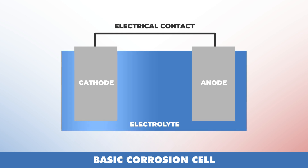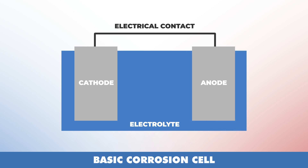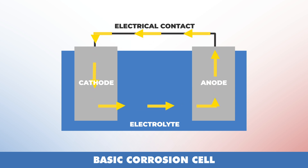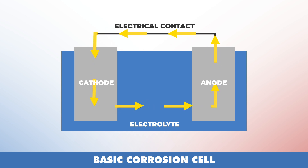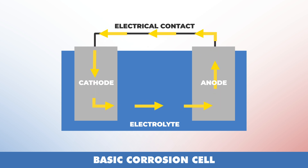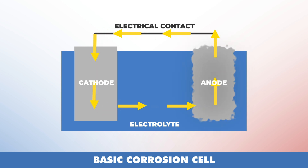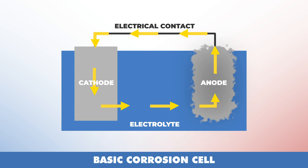An electrolyte is a substance with low electrical resistivity that surrounds the anode and cathode. When the cell is complete, there is an electrical current flow from the anode to the cathode. This happens because the anode and cathode are two different metals that require different amounts of energy to be processed from ore. They present each other with an energy difference, or an electrical potential difference. When the current flows, it causes corrosion damage to the anode.